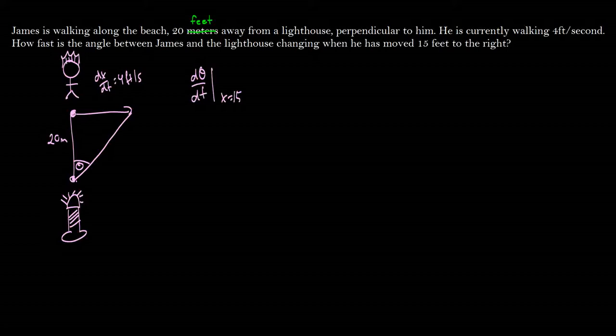So do we have a formula for a situation like this? And the first thing you say is no, we don't, but we actually do. In fact, you might remember this from trig. Tan of theta is equal to x over 20.